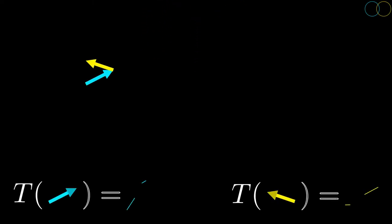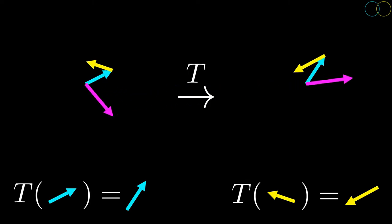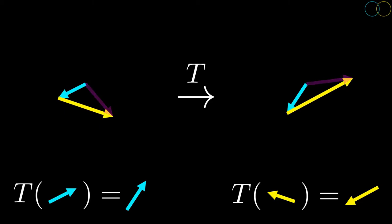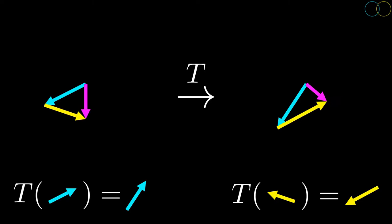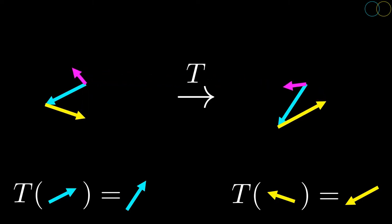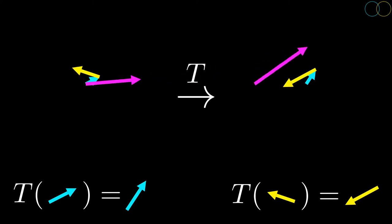As mentioned in part 1, for a given basis, all vectors in the vector space can be represented by a linear combination of the basis vectors. From the definition of linear transformations, we can see that the transformation of any vector can be represented as the linear combination of the transformed basis vectors. This means that we can uniquely describe any given linear transformation simply by what happens to the basis vectors for a given basis.